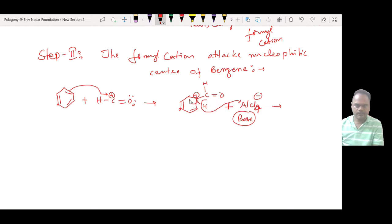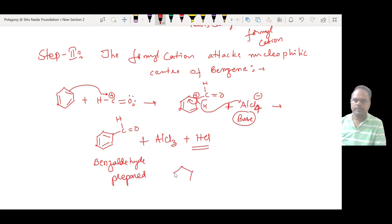As a result, the sigma bond is converted into a pi bond. A C=O double bond is formed, and benzaldehyde is prepared. The AlCl3 catalyst is regenerated, and HCl is formed as a byproduct.